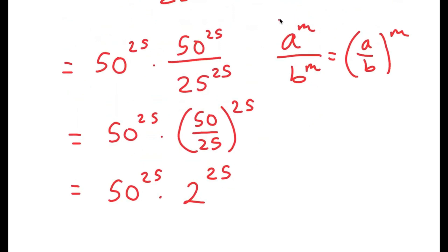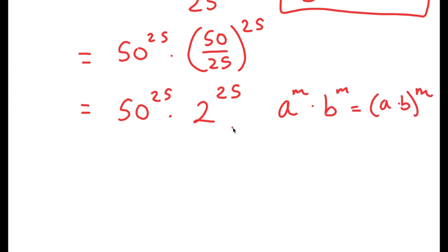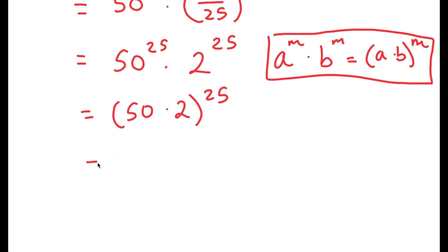Another property I can use — the final property of this video — is that a^m times b^m equals (a times b)^m; you're basically factoring out the exponent. So I have 50^25 times 2^25, which can be written as (50 times 2)^25. Now, 50 times 2 is 100, so I get 100 to the power of 25.